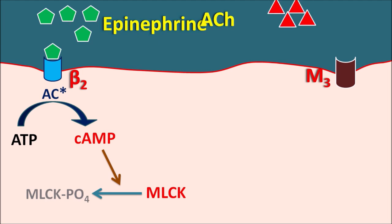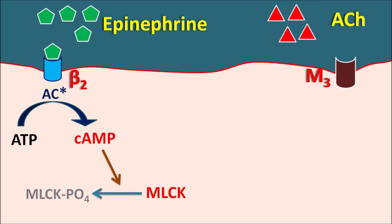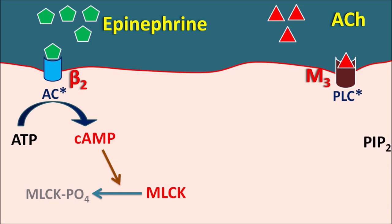Now let us see how acetylcholine acts. Acetylcholine binds to M3 receptors and activates them. These are G protein-coupled receptors coupled with the phospholipase C system. When the phospholipase C system is activated, it cleaves phosphatidylinositol bisphosphate (PIP2) into two important messengers: IP3 (inositol triphosphate) and DAG (diacylglycerol).